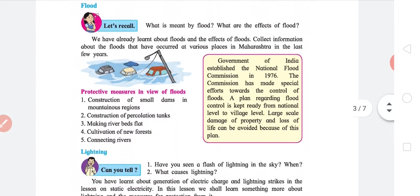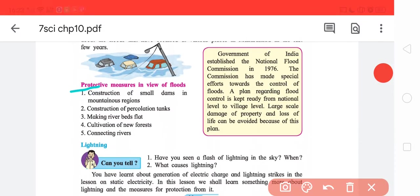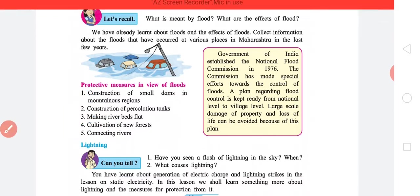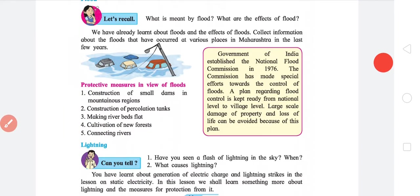What we do in case of floods: construction of small dams in mountainous regions so that they hold the water and it does not spread to other places. Two, construction of percolation tanks to put that water into the soil. Three, making river beds flat. Fourth, cultivation of new forests. This is really good because forests hold the soil. Fifth, connecting rivers. Often it happens that one river is dry and the other is flooded, so by connecting the river we can avoid the floods. One of the severe effects of floods was the Chennai water floods, which was really bad.